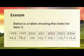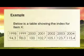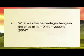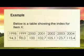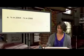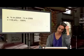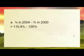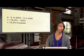Below is a table showing the index for item X, with a time span between 1998 and 2004. Question A: what was the percentage change in the price of item X from 2000 to 2004? Looking at the table, 2000 is 100 and 2004 is 115.4. We take the 2004 percentage and subtract the 2000 percentage - 115.4% minus 100% - giving us an increase of 15.4%.